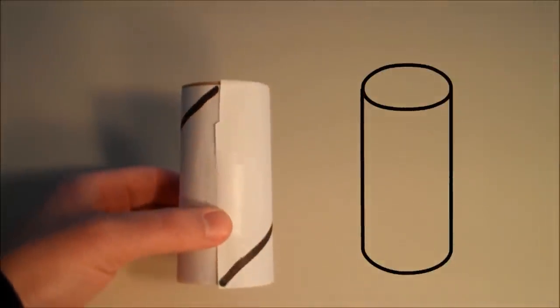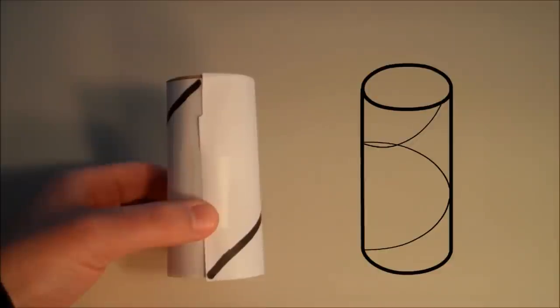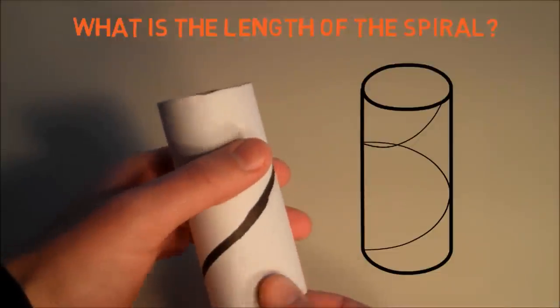Consider a cylinder where we have a spiral that's drawn from the bottom of one end to the top of the other that loops around one time. The puzzle is, what is the length of this spiral?